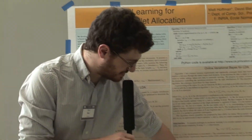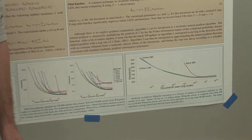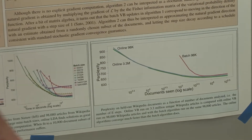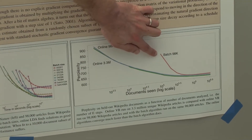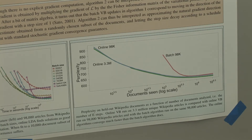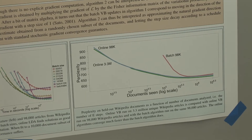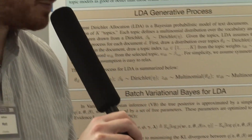For example, in this plot, we're fitting LDA to Wikipedia articles, and this red line here is the batch algorithm fit to a subset of just about 100,000 documents, which is about 3% of the total data. And even though it's only looking at 3% of the total data, it's still around an order of magnitude — maybe a little more — slower to converge than the online method that's looking at all of the documents.